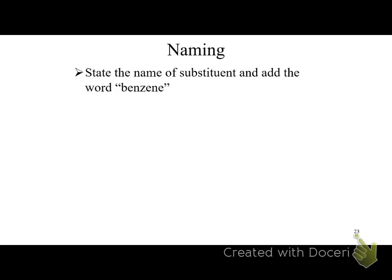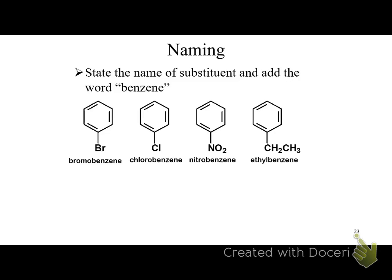Now we're going to do nomenclature. The basic format is: a substituent name followed by benzene. For example: chlorobenzene, nitrobenzene, ethylbenzene. That's pretty simple. If you have a disubstituted benzene, you have to put numbers on it.